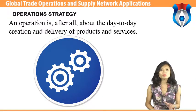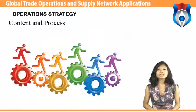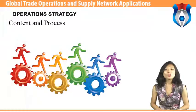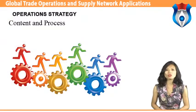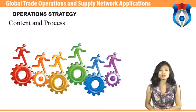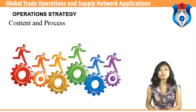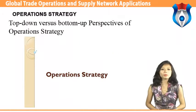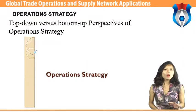Operation strategy looks at the long-term issues of how to manage the resources which produce products and services. The content of operation strategy is concerned with the specific decisions which shape and develop the long-term direction of the operation — think of content as the building blocks of an operation strategy. The process of operation strategy refers to the procedures used to formulate operation strategies — think of content as what the organization is deciding to do and process as how the organization has made that decision.